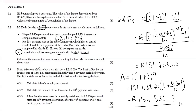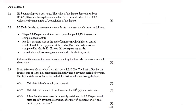6.3 says Pelisa takes out a loan to buy a car that costs R350 000. The bank offers an interest rate of 9.3% per annum compounded monthly and a payment period of six years. Her first installment is due at the end of the first month after taking the loan. 6.3.1 asks us to calculate Pelisa's monthly installment — this is a loan, so we use the present value formula.